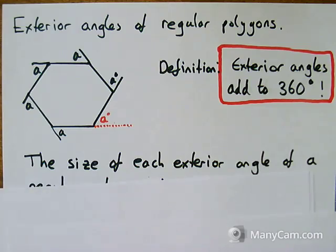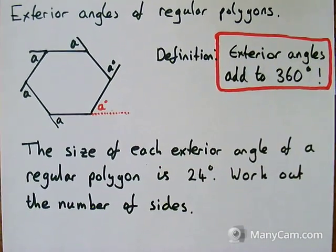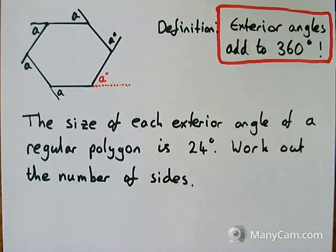If I was going to go through an example then, I've got a question here: the size of each exterior angle of a regular polygon is 24 degrees, and I want to work out how many sides that polygon has.